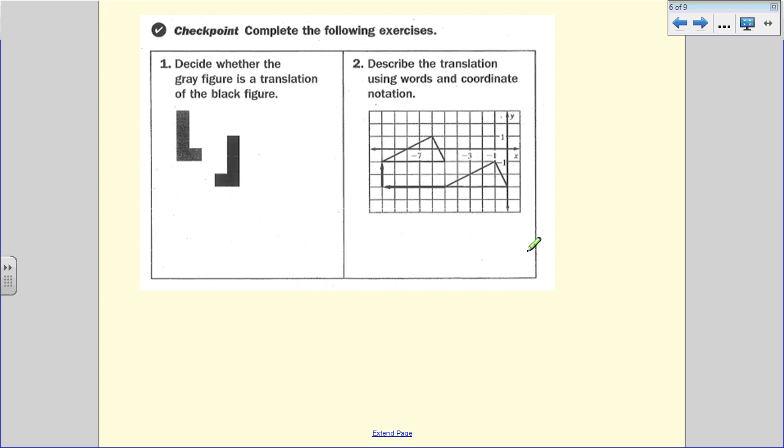Let's take a look at the checkpoints. Describe whether the gray figure is a translation of the figure in black. And then describe the translation using words and coordinate notation. So I want to know, did you go left or right? And then did you go up or down? And then how many spaces? And that will give you your coordinate notation. So you have to put your plus or minus there. These are going to be do now, and then we are going to check in class. I'm going to pull you up and take a look at those one-on-one tomorrow.